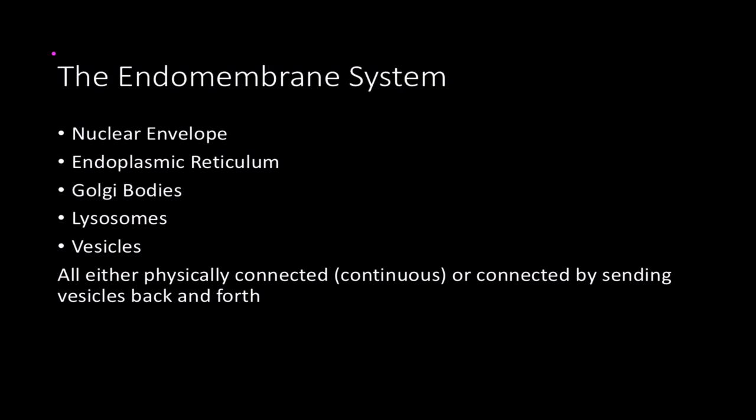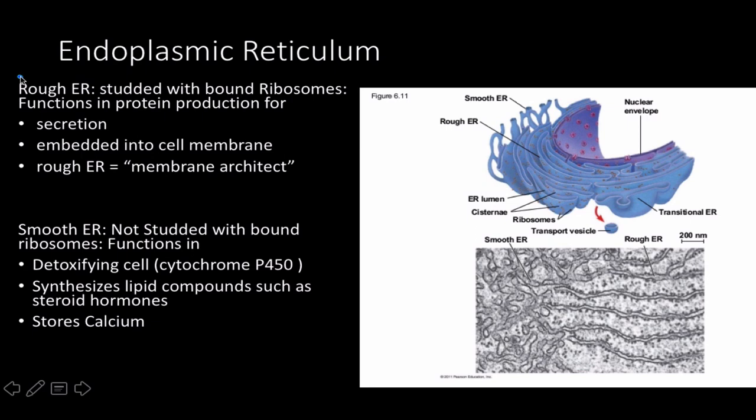Switching gears, let's talk about the endomembrane system. All parts of the endomembrane system are either physically connected continuously or connected by sending vesicles back and forth. We're going to list the parts and explain what they do as we go along.